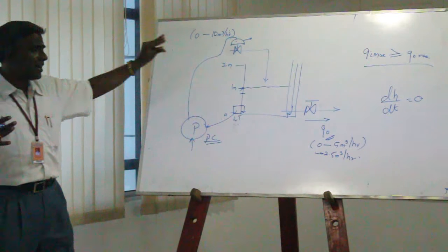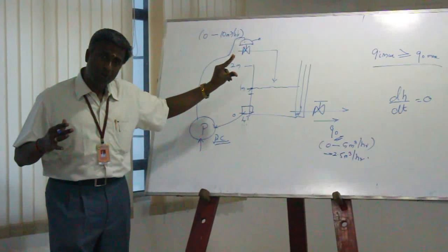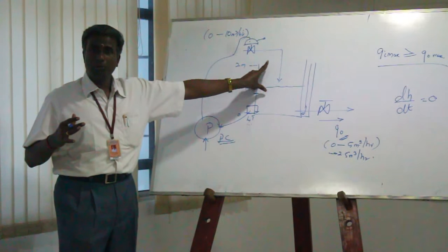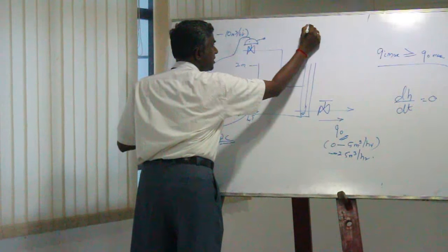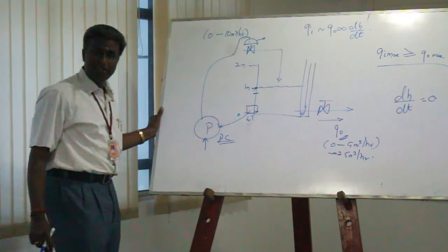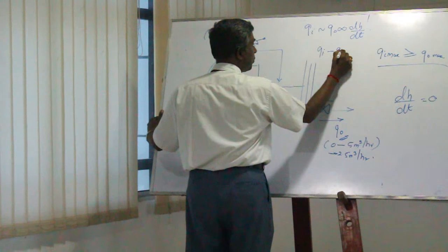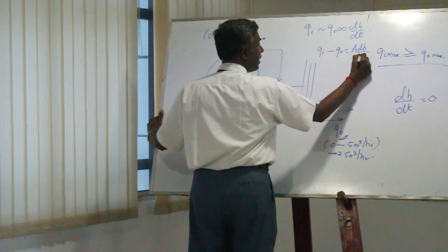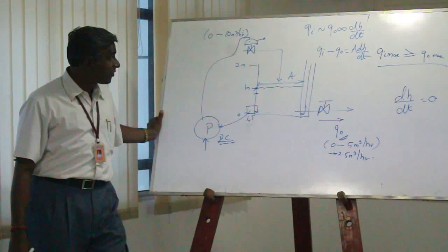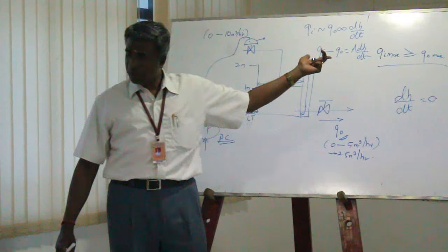Before getting into generalizations, I can very easily now design a mathematical model. What do I do in my mathematical model? Use some equations which I know and fit them here, so that terminates into a model. First simple thing: what is going on? The difference between the inflow and outflow is always proportional to rate of change of height. I can use this condition. That is why I can say qi minus q0 is equal to A dh/dt, where A is the surface area. So depending upon the surface area, I am equating this as a proportionality constant.